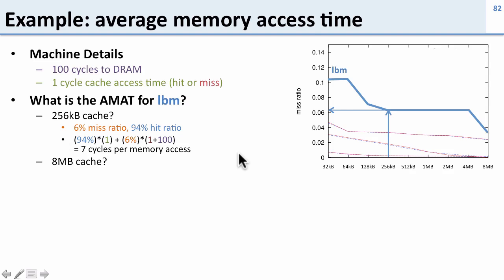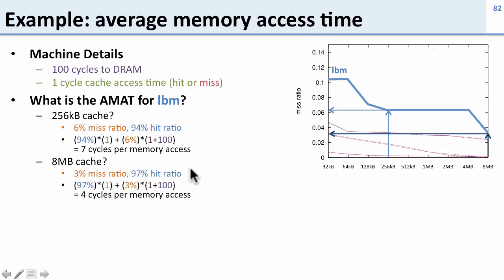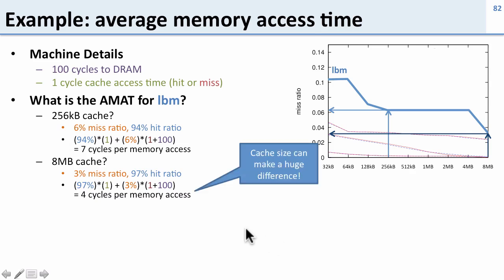What happens when we give LBM a lot more cache — say eight megabytes? We saw that reduces the miss ratio significantly to about 3%, giving a 97% hit ratio. Doing the calculation again, we get four cycles per memory access — about twice as fast. This makes clear that cache size can make a huge difference in the time it takes to access memory.